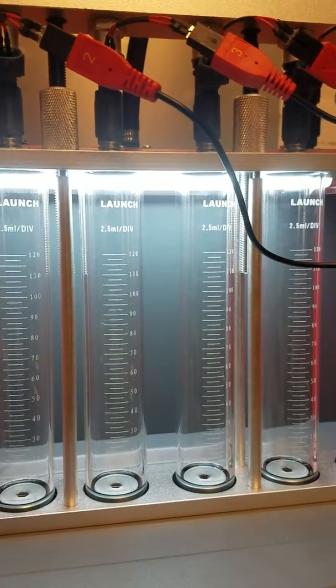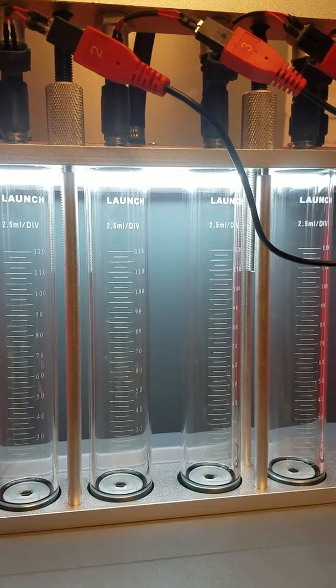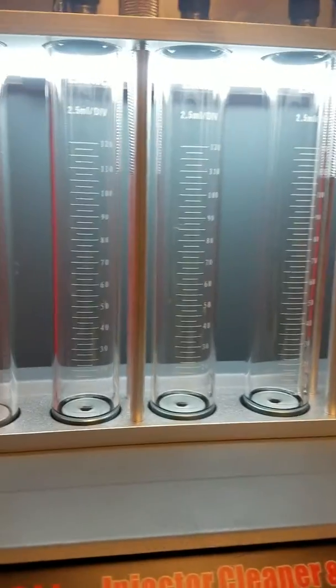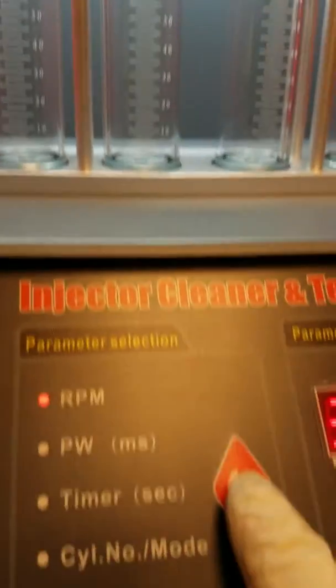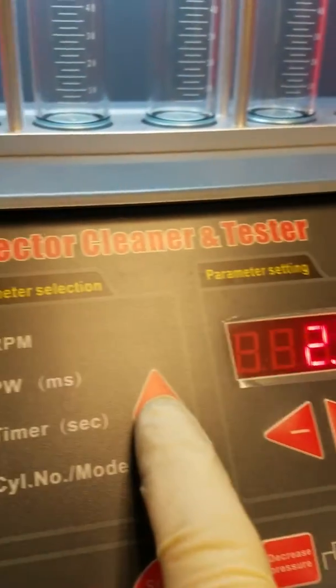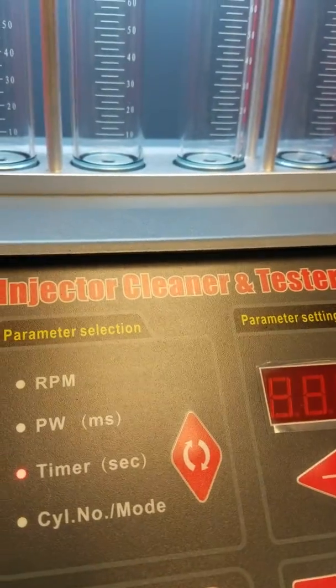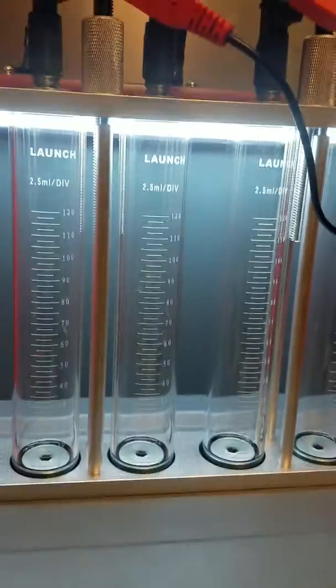But what's really funny is to watch what happens when I try to control it. So this is 3,000 RPM on our gauge here. We're doing 2.5 milliseconds of pulse width. We'll do a 15-second test, and you guys can see what happens.